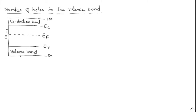The lower energy band is called the valency band. Its limit starts from minus infinity to plus EV. EV is the energy of the top level of the valency band, and EC is the energy of the bottom of the conduction band. Plus infinity is the maximum energy for the conduction band. In between these two, we have the Fermi energy, which lies exactly in between the valency band and the conduction band.